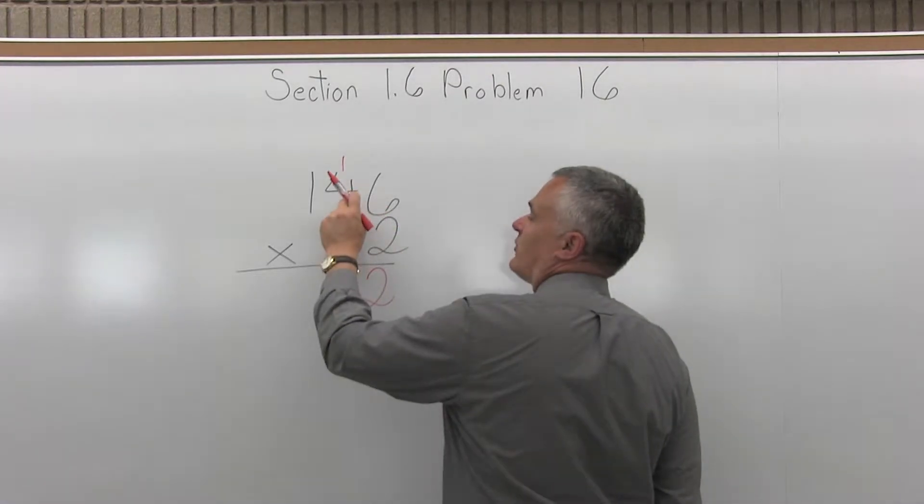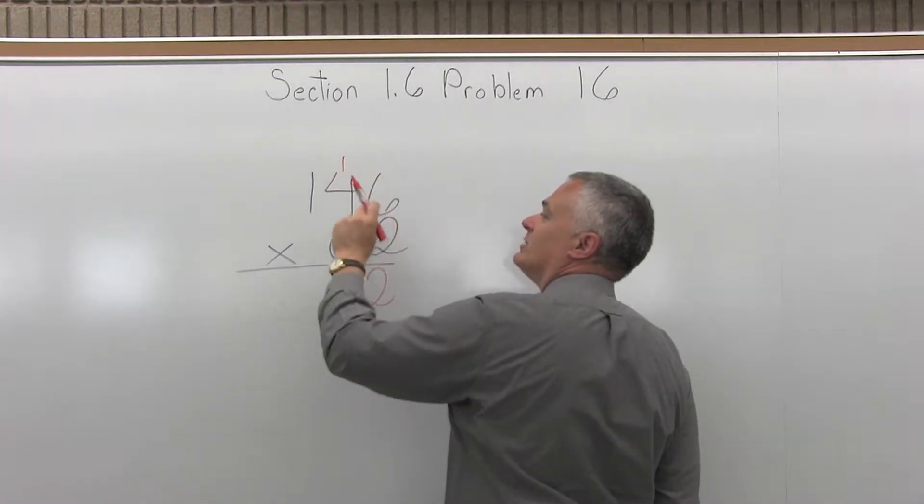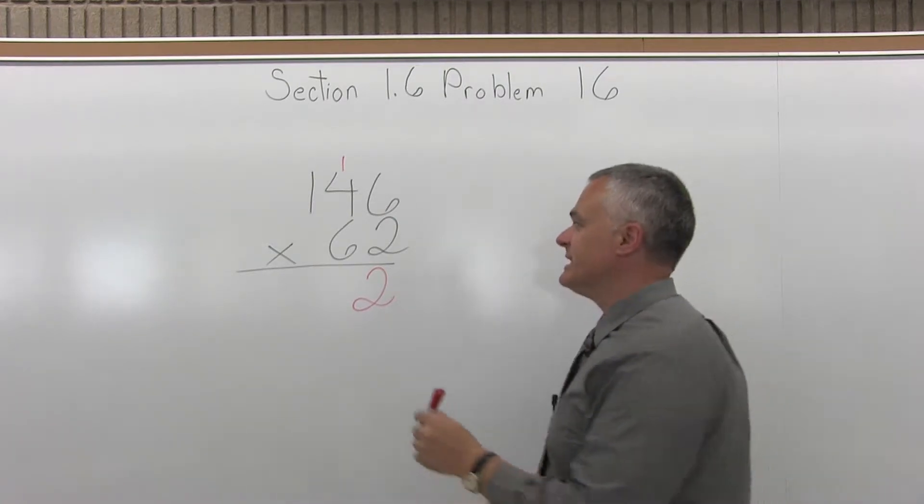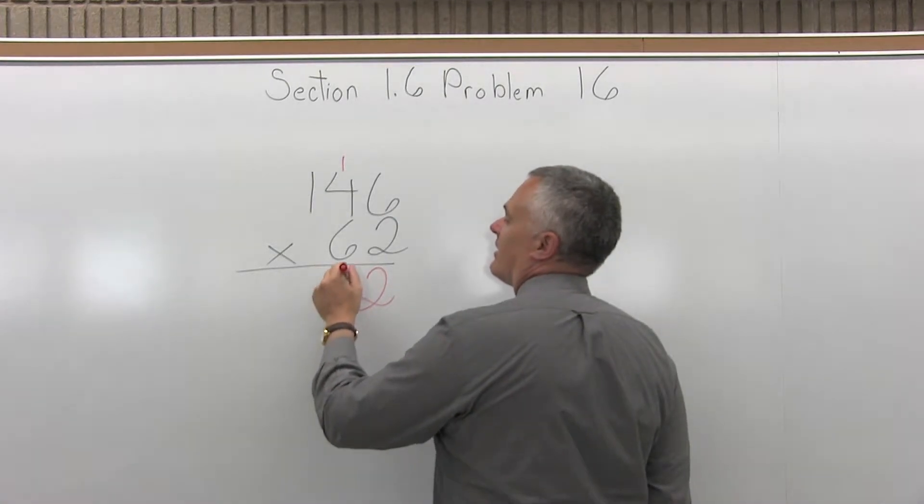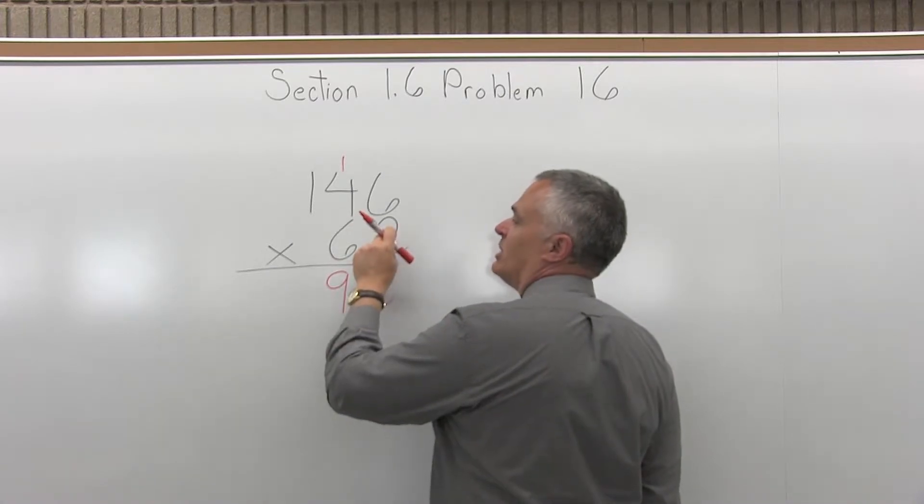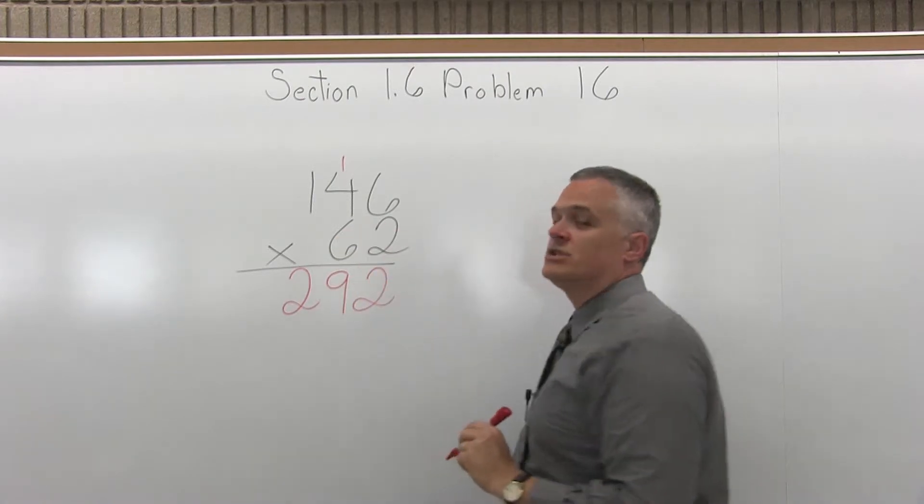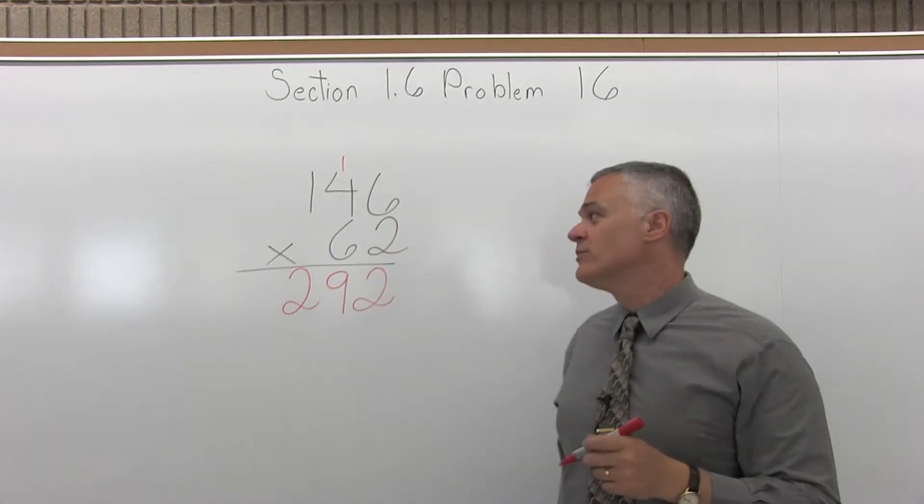Now we will multiply 2 times 4 and add the one that we carried. 2 times 4 is 8, 8 plus the additional one that we carried, 8 and one more is 9. Now there's nothing to carry for that one, so you just put the 9 and move on to the next item. So now we multiply 2 times 1, which is 2. So that takes care of the 2. Now we're going to move to the 6.